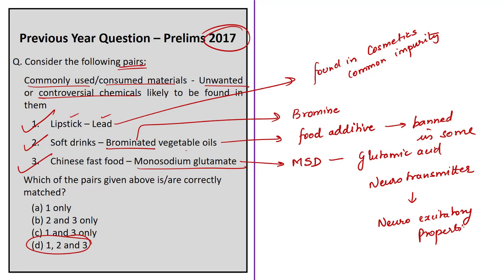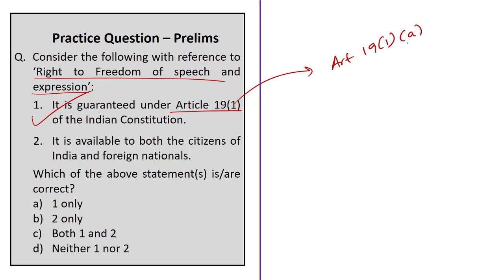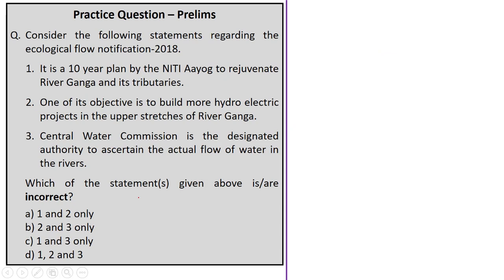The next question is a simple one based on the right to freedom of speech and expression. The first statement says it is guaranteed under Article 19(1) of the Indian Constitution — this is correct, as it is provided in Article 19(1)(a). The second statement says it is available to both citizens of India and foreign nationals — this is wrong, as this right is available only to citizens of India and not to foreign nationals. The question asks for the correct statement, so the correct answer is option A — 1 only. The next question is about the ecological flow notification of 2018.